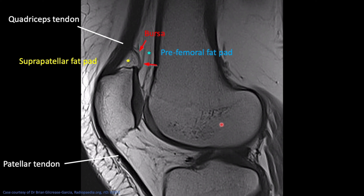This is a sagittal T1 MRI showing the suprapatellar fat pad, the pre-femoral fat pad (pre-femoral means in front of the femur), and the suprapatellar bursa. You see how thin this is - so if this is more than five to ten millimeters, we call it a knee effusion. You can see here the quadriceps tendon goes onto the patella and forms the patella tendon, which inserts on the tibial tubercle.